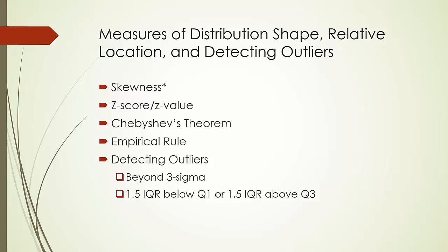IQRs and z-scores are sometimes used to help us identify outliers. Outliers are extreme values in the data — they can be unusually large or small. When using z-scores, we usually say that values beyond 3 standard deviations of the mean are possibly outliers. When using IQR, we usually say that values 1.5 IQR below the 1st quartile or 1.5 IQR above the 3rd quartile are possibly outliers. One caution: do not simply discard values you believe are outliers. We can discard an outlier only if we can verify it was caused by an error, such as the value being recorded incorrectly.